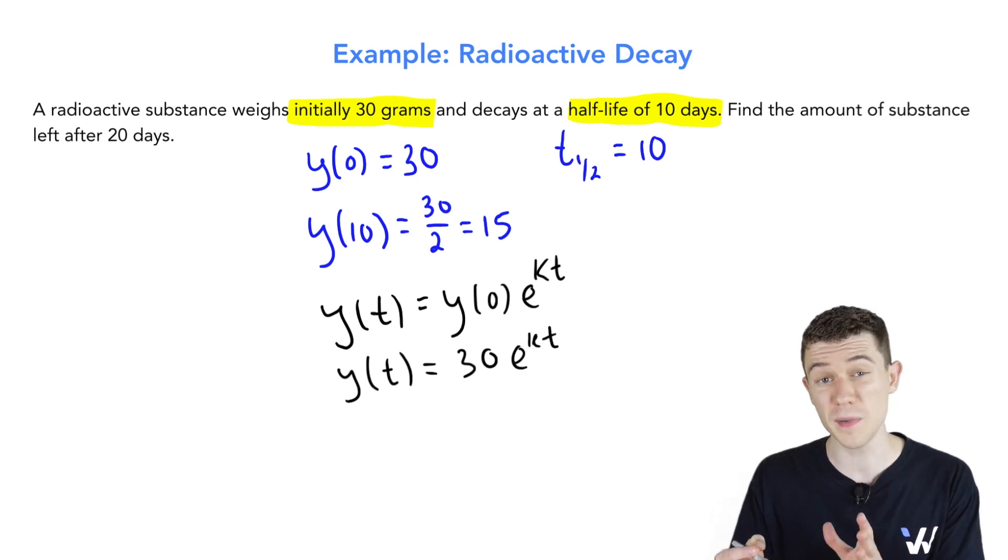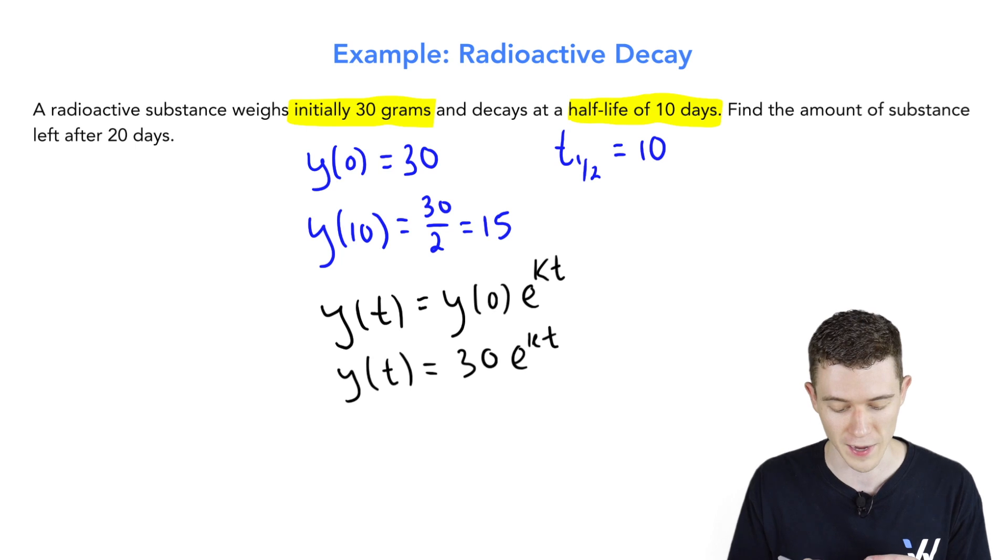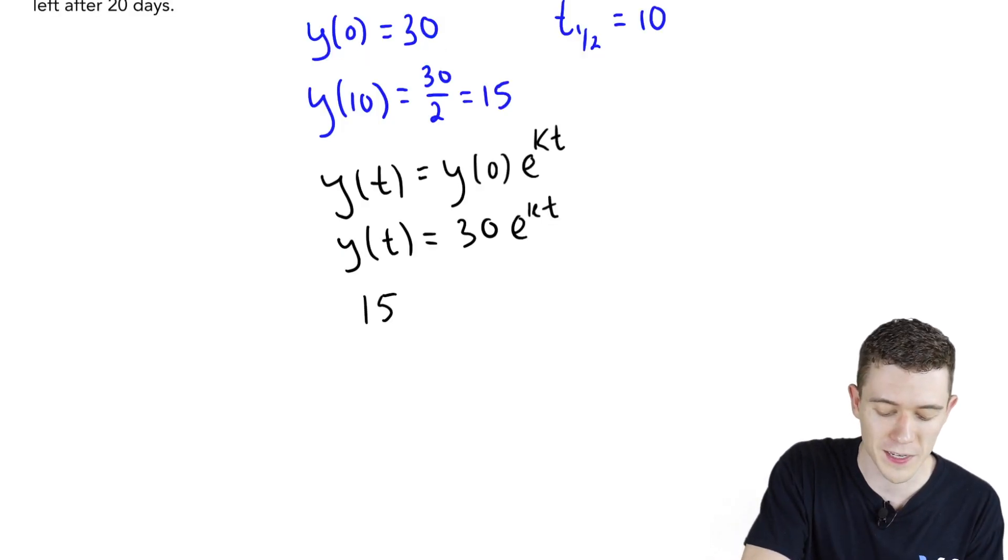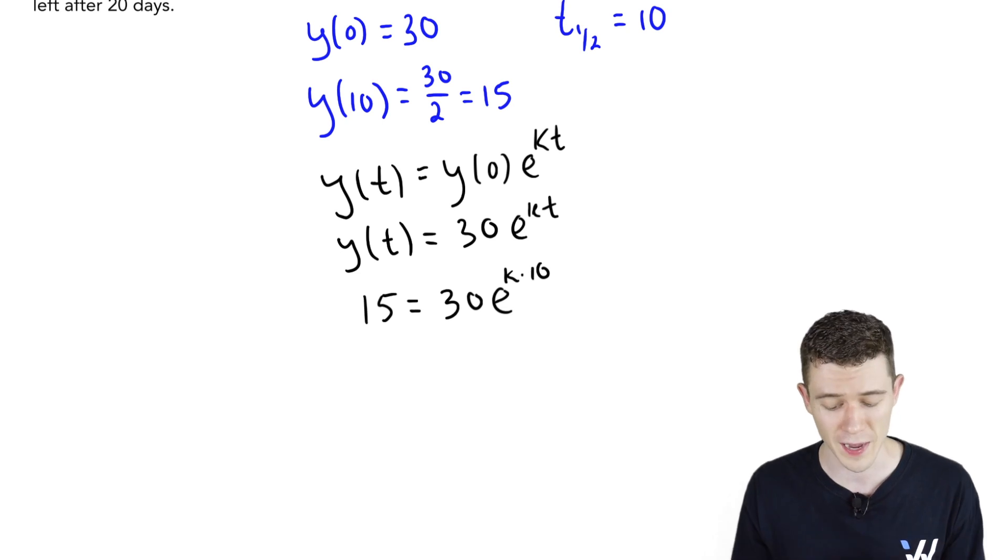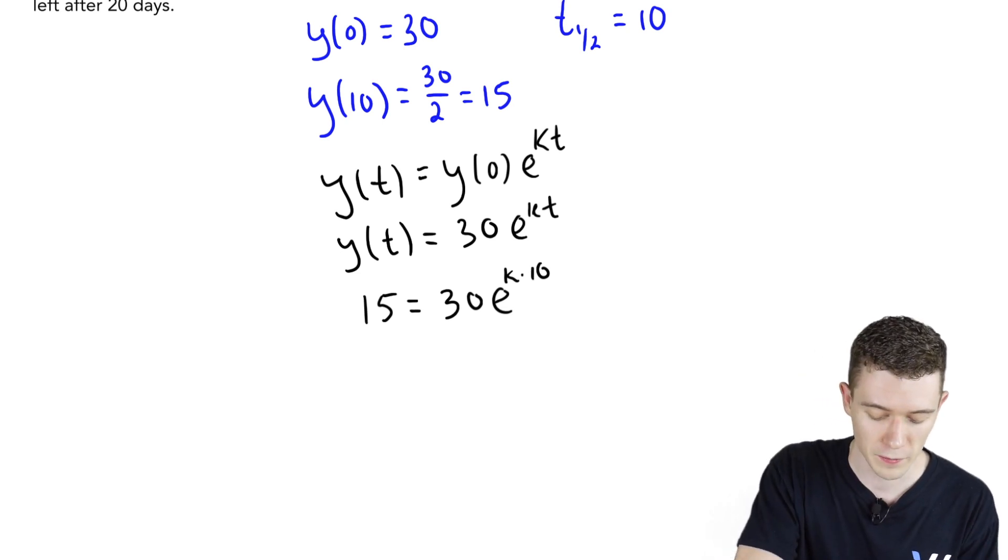We can use our other piece of information to solve for that k. Y(10) equals 15. We get out 15 when we plug in 10 for t. This will be e^(k times 10). Let's go ahead and solve for k. Divide both sides by 30. 15 over 30 is 1/2. e^(10k).